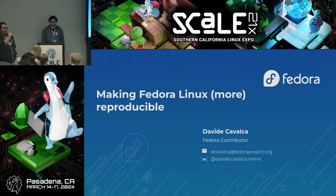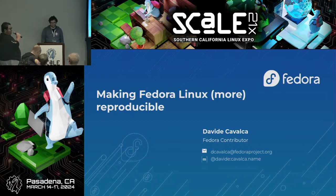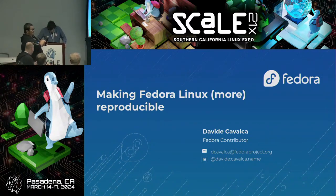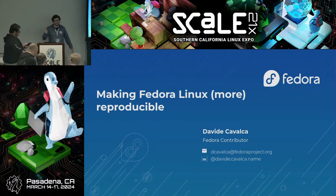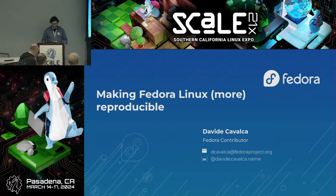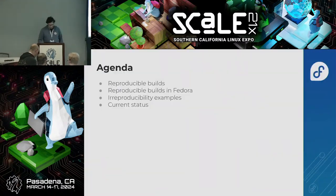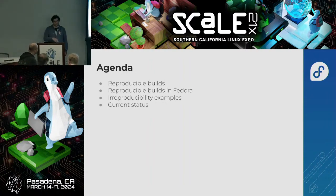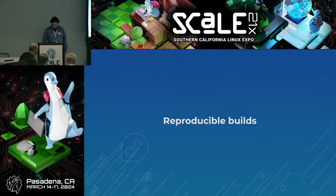Welcome to the immutable and reproducible track. We are joined by Davide Cavalca, Fedora contributor, talking about making Fedora Linux more reproducible. I'm a production engineer at Meta by day, but this is mostly about work done in Fedora. The work I'm presenting was primarily done by another Fedora contributor, Ros Bischek, who is not here — all credit goes to him. We'll start with a quick intro about what reproducible builds are and why we should care, then talk about reproducible builds in Fedora, give examples of when things go wrong, and close with where we are and where we're going.